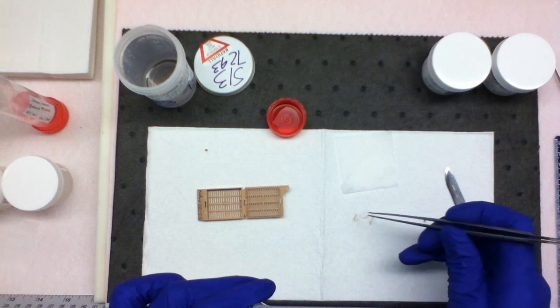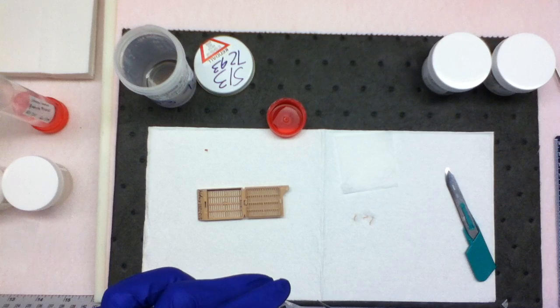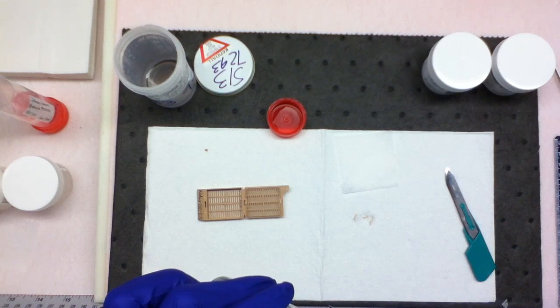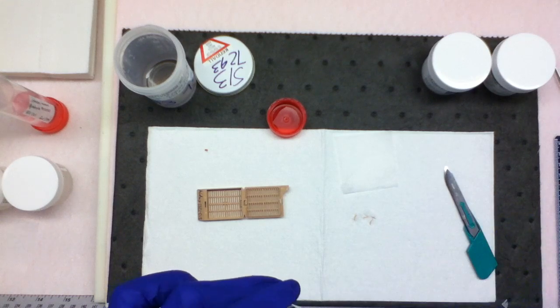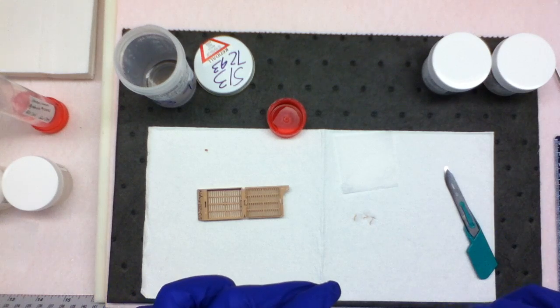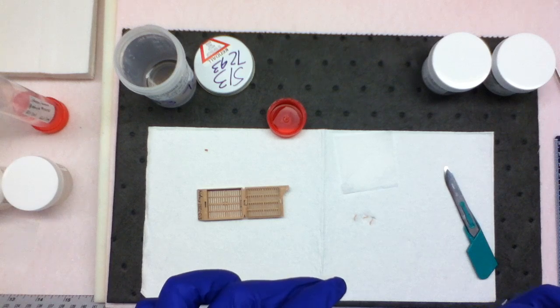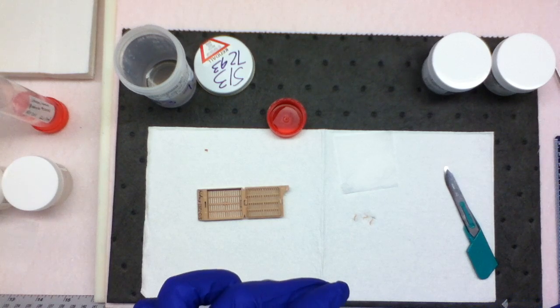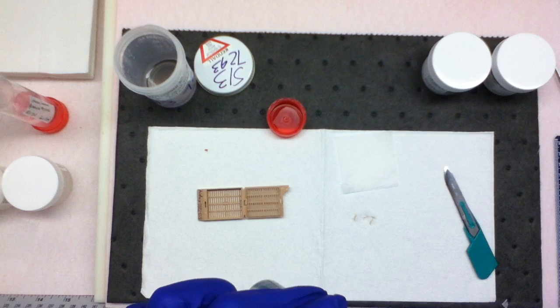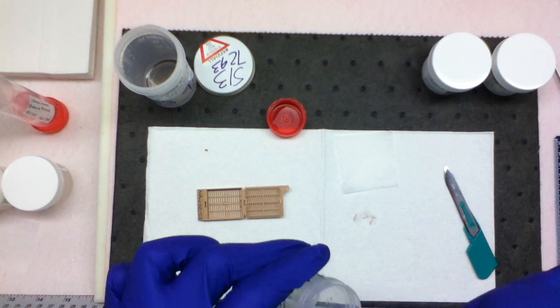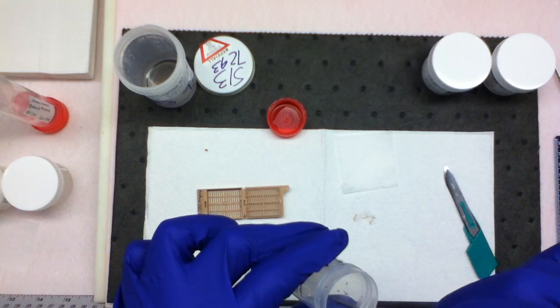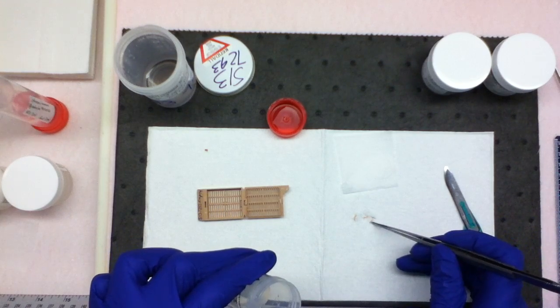Glutaraldehyde does not penetrate the tissue as rapidly as formalin does. You want to make sure you have plenty of glutaraldehyde for the tissue sample. Even though the tissue sample is extremely small, you still want to make sure there's plenty of glutaraldehyde in there.